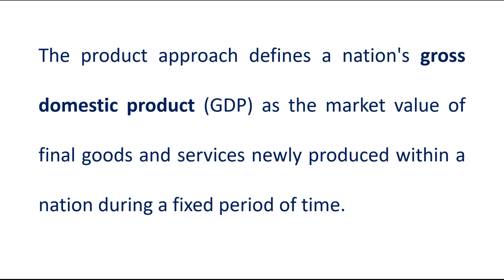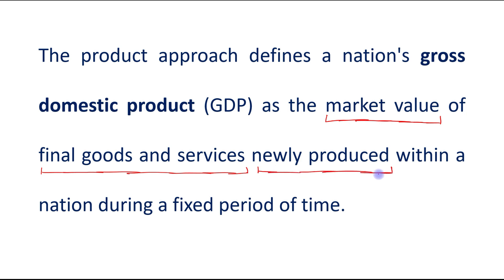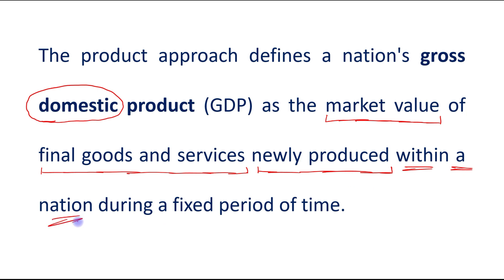The first thing is the market value. The second thing is the final goods and services. The third is newly produced. When we are saying gross domestic product, the word used here is domestic. Domestic means within a nation during a fixed period of time.